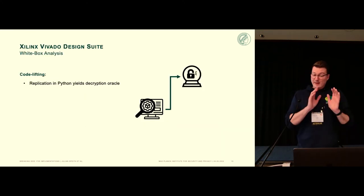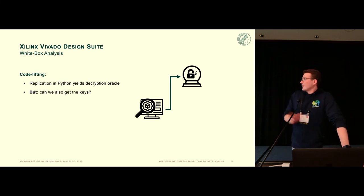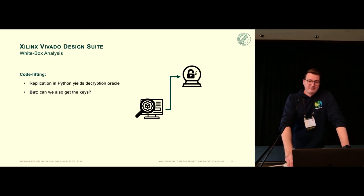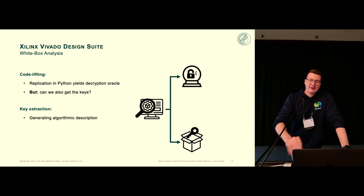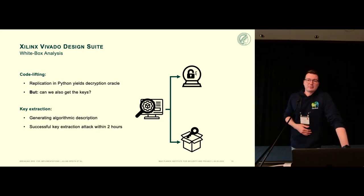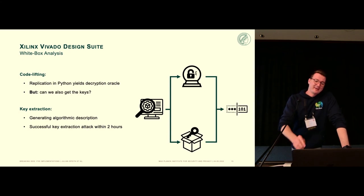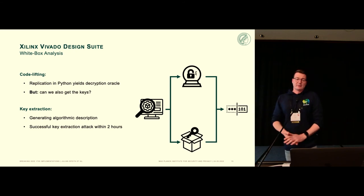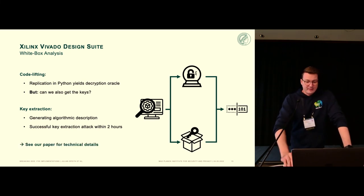For the Xilinx white box — and there are a lot of technical details in our paper — we replicated the white box in Python, effectively performing code lifting. We also wanted to extract the actual keys, so we generated an algorithmic description from the Python code and brought it to Alexander Meyer, one of the crypto professors at our university. About two hours after entering his office, we left with five RSA keys — and actually factorized 2048-bit keys in the process. You can then use either the decryption oracle obtained by replicating the algorithm in Python, or the extracted keys, to decrypt any IP core that has been encrypted for Xilinx Vivado.